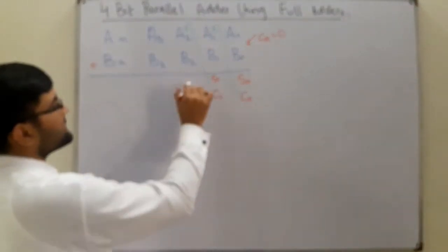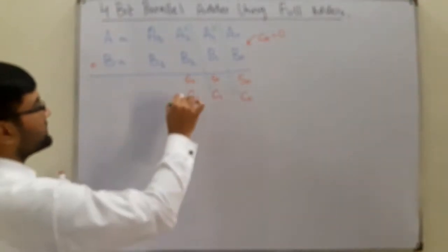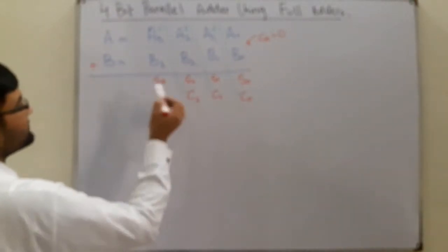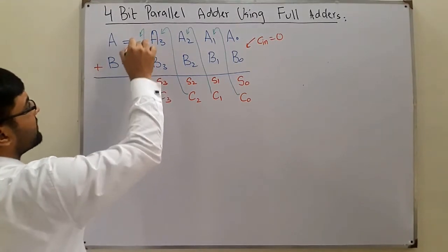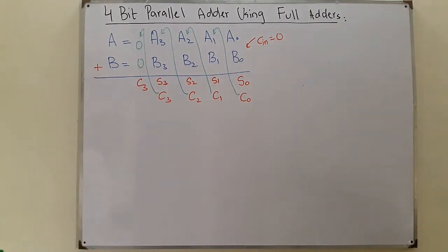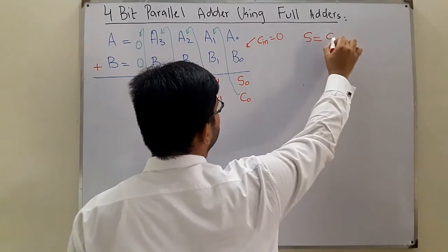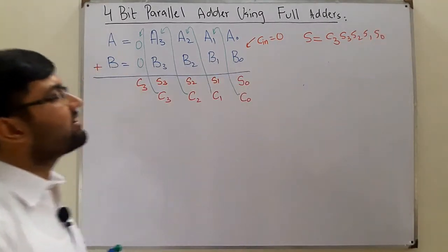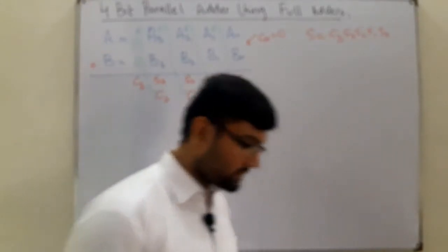c1 is added to the next bit: a2 and b2 are added to give s2 and carry c2. Then c2 is added to the next bit: a3 and b3 are added to give s3 and carry c3. This c3 comes out as the final carry. The final sum would be c3, s3, s2, s1, s0 — a 5-bit sum — or a 4-bit sum if c3 is 0.